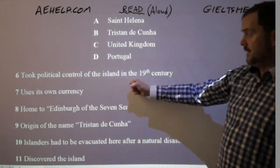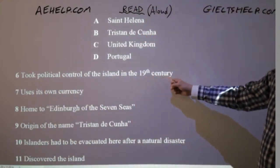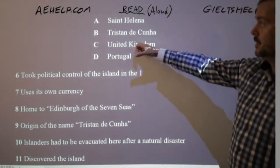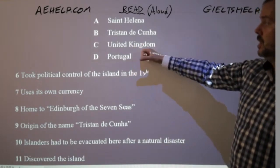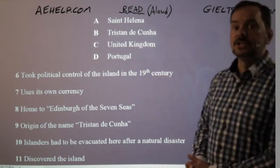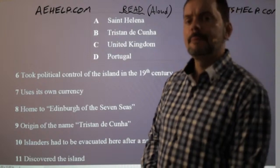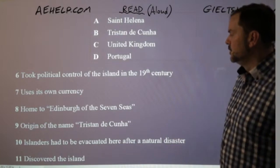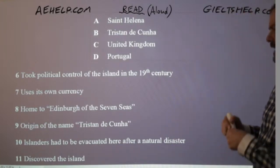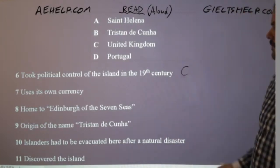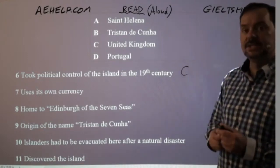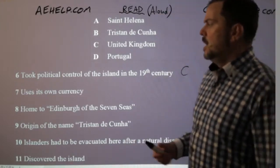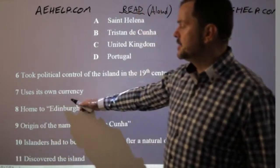Question 6: 'took political control of the island in the 19th century.' Either UK or Portugal. David says UK — yes, in 1816 the UK annexed the island. Question 7: 'uses its own currency.' Tristan da Cunha uses the British pound, but the passage points out that neighboring St. Helena uses the St. Helena pound — its own currency. So St. Helena is the answer.